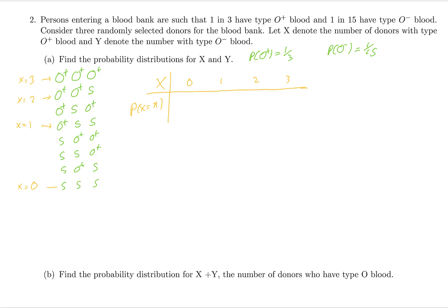Probability of X equals 0 means all three donors are something other than O plus (S, S, S). Since they are independent, this equals probability of S cubed. The probability of S equals 1 minus probability of O plus, which is 1 minus 1/3 equals 2/3. Therefore P(X=0) equals (2/3)^3 equals 8 over 27.